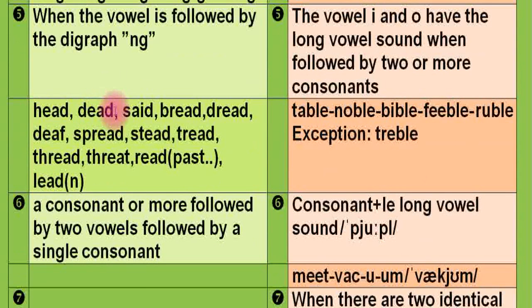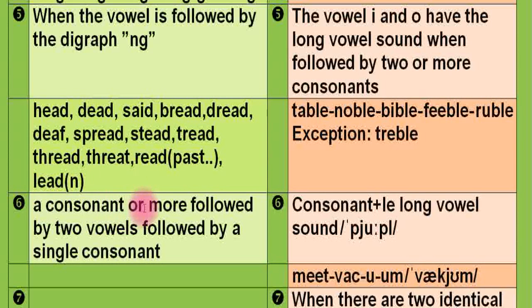Another short vowel pattern: the letters EA can spell a short E sound, as in 'head', 'dead', 'shed', 'bread', 'dread', 'death', 'spread', 'stead', 'tread'. Also 'read', 'lead' as a noun. This follows the pattern of a consonant or more followed by two vowels followed by a single consonant.